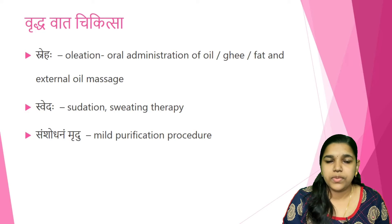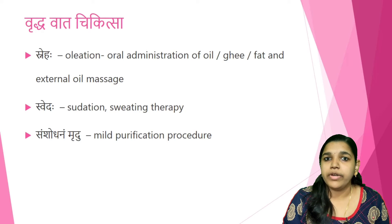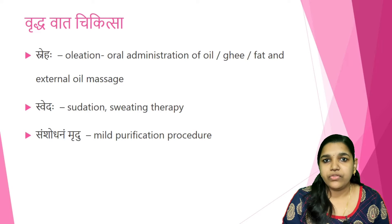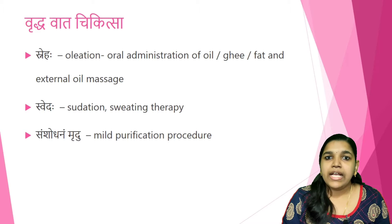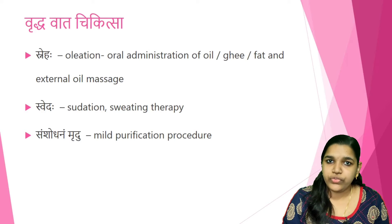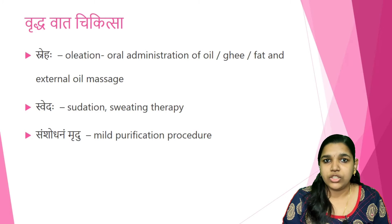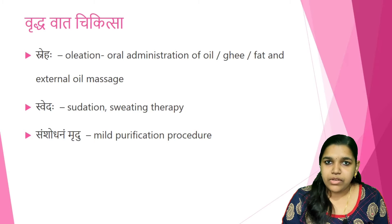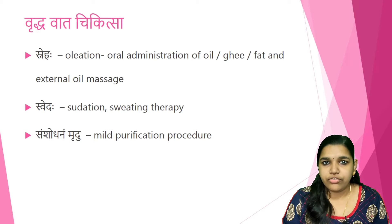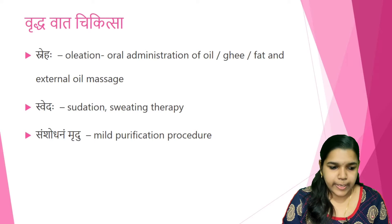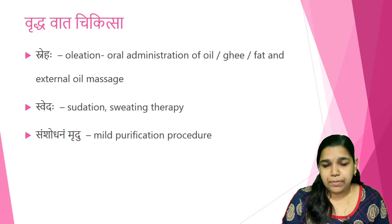How we can control Vata Dosha excess is now explained. First is Snehana — oleation therapy using dravyas with Snigtha property. Sneha is of two types: Bahya Sneha and Abhyantara Sneha, that is external and internal administration. The four major Snehas are Sarpi, Thaila, Vasa and Majja. The best Shodhana or Shamana Aushadi for controlling Vata Dosha is Sarpi and Thaila.